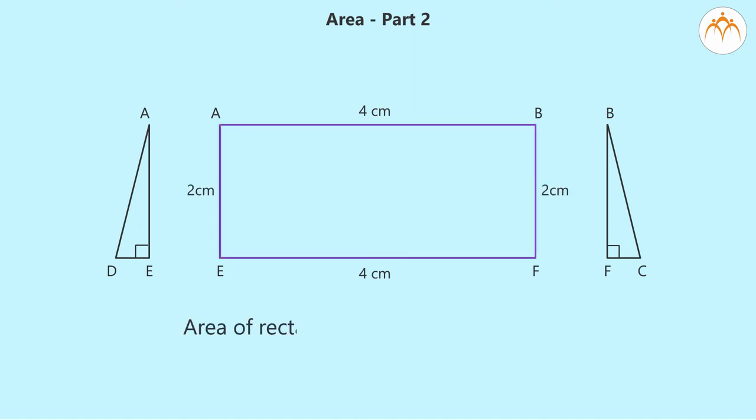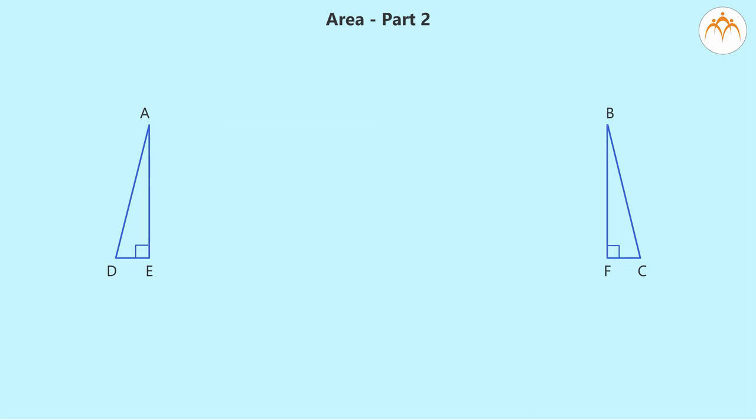The area of AEFB is 4 times 2 equal to 8 square centimeters. Now, to find the area of triangles AED and BFC. AE is equal to BF and angle AED and angle BFC are right angles.